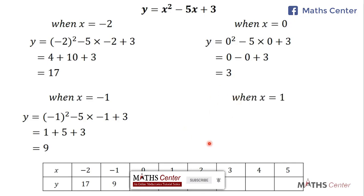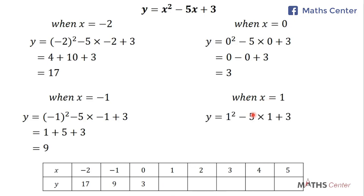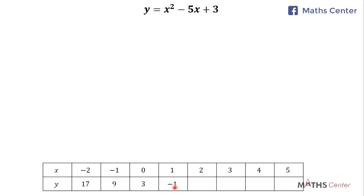The next x value is 1. y = 1² - 5 × 1 + 3 = 1 - 5 + 3 = -1. When x = 1, y = -1.